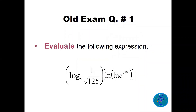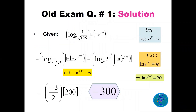Question number one: we have to evaluate the following expression with two brackets. For the first bracket, we see the square root of 125, which is 5 cubed. The square root becomes 5 to the power 3/2. Since this is in the denominator, we raise it to the numerator, giving log base 5 of 5 to the power −3/2. Using the property log base a of a^x = x, the first bracket equals −3/2.